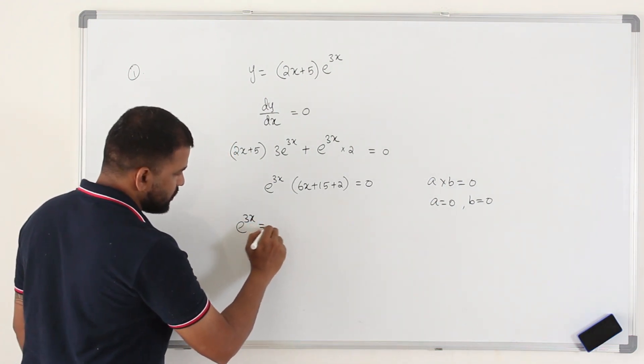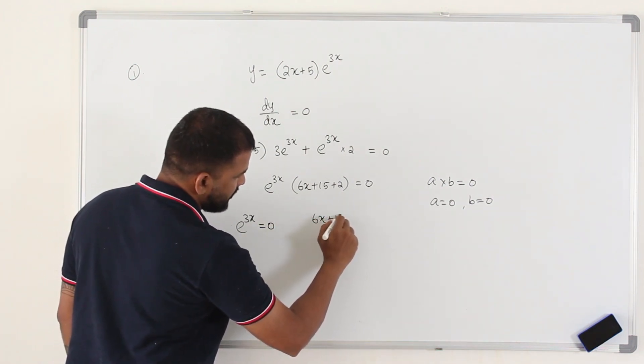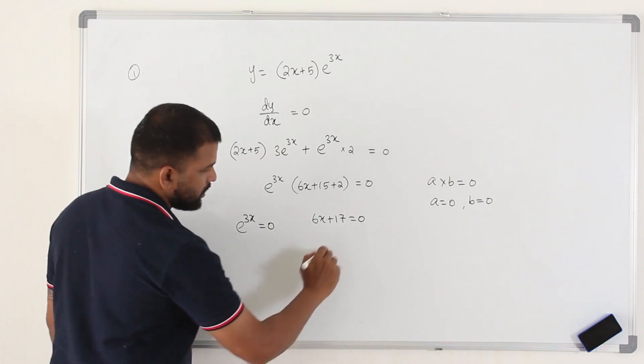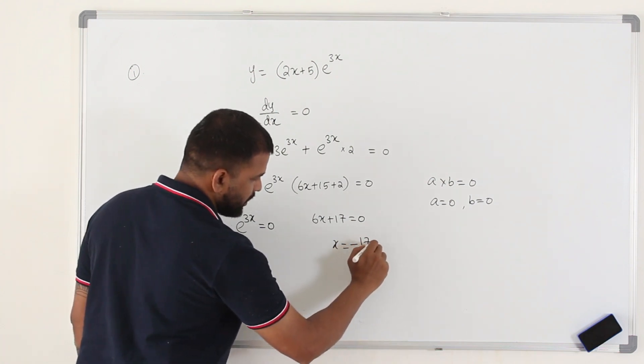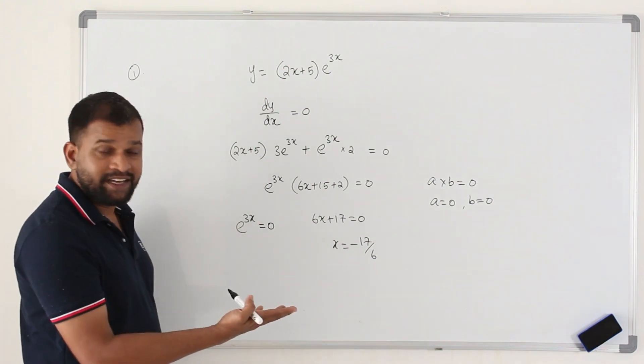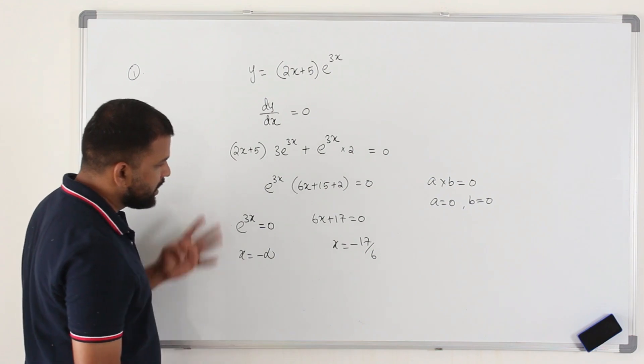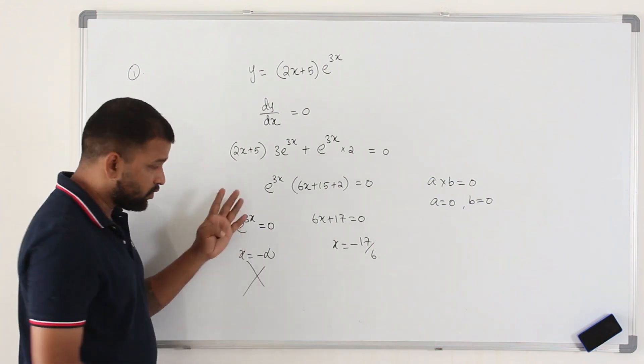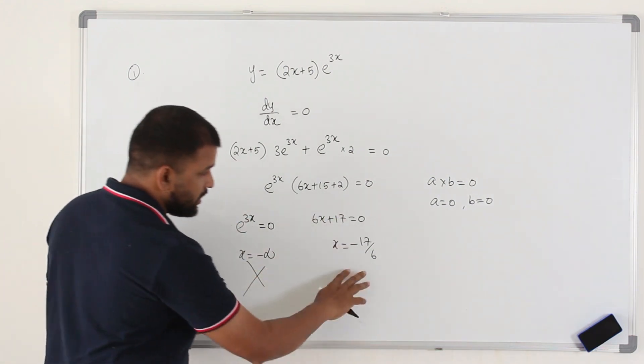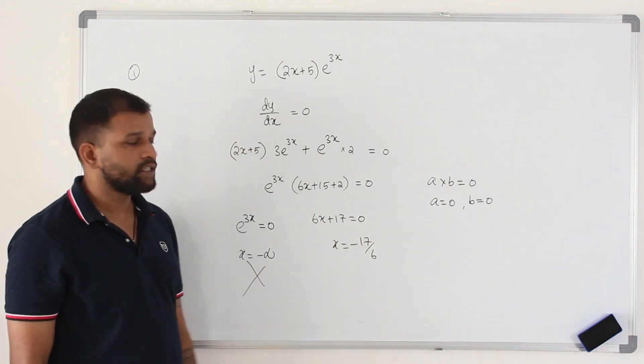So e^(3x) = 0. 6x + 17 = 0. So x is negative 17 over 6 here. e to the power minus infinity is 0, so x supposed to be minus infinity. Here you don't get the x coordinate, so ignore this. Here the x-coordinate of the stationary point is minus 17 over 6.